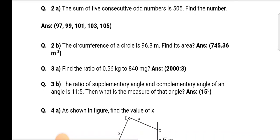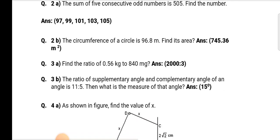Question number 2b: The circumference of a circle is 96.8 meters. Find its area. Answer: 745.36 meter square.